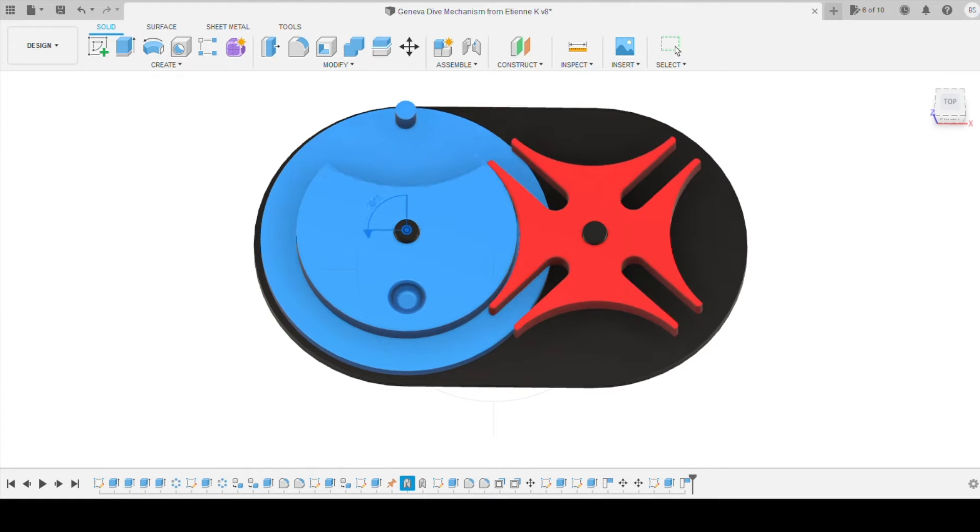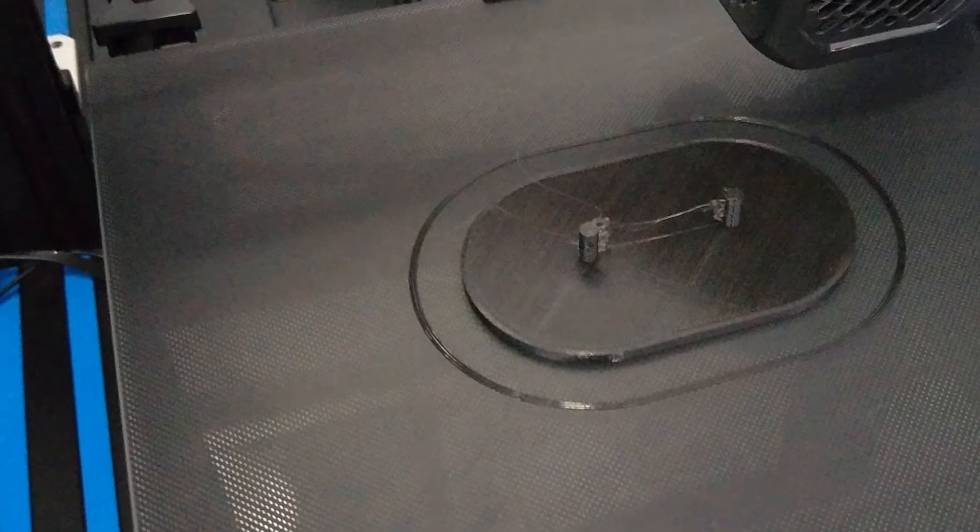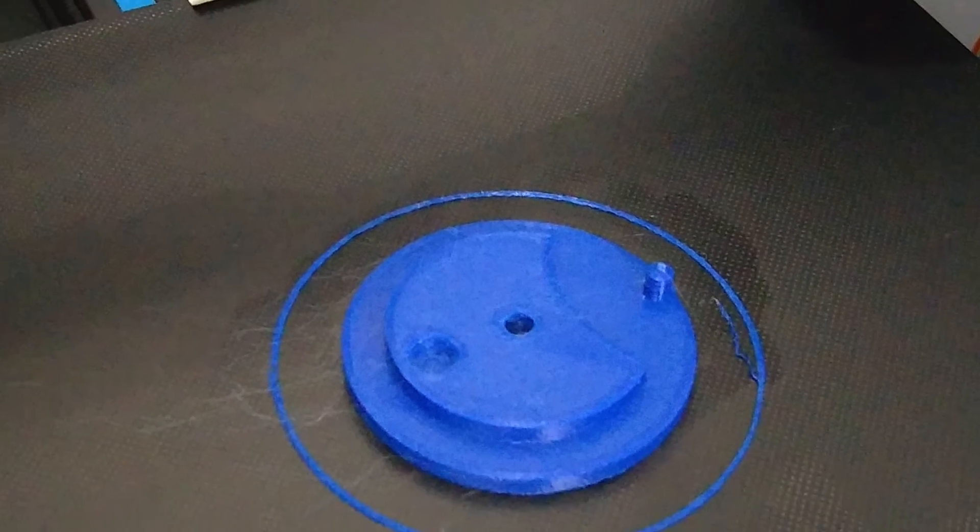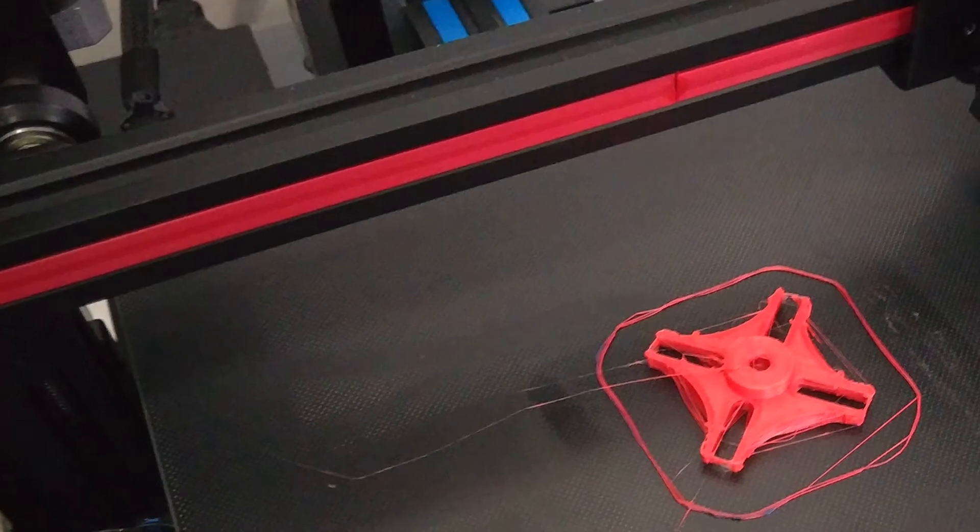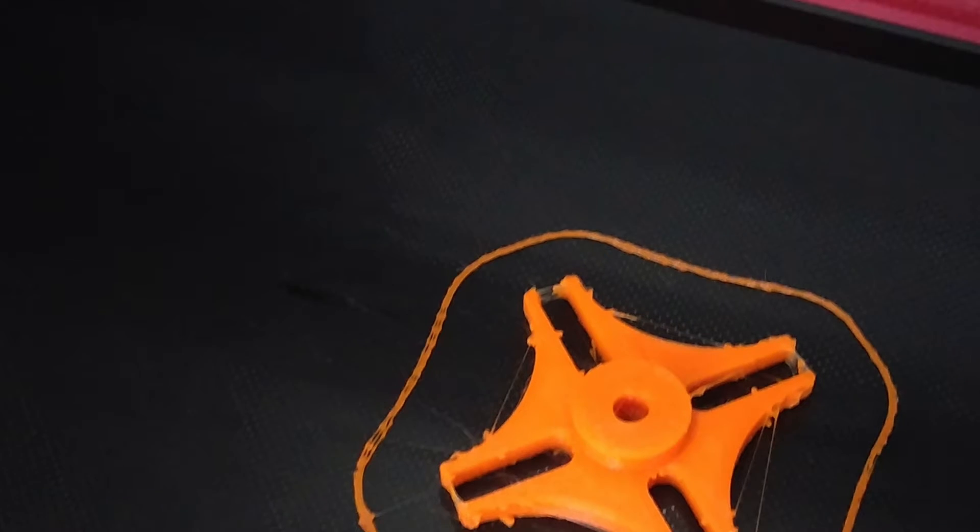After designing them, then I sent them to my Ender 3 version 2 3D printer, printing the base out, the cam in some different colors, and then printing a couple different versions of the follower, just to have some variety.